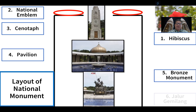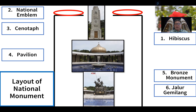Imagine you have just arrived. Outside the National Monument you will see lots of hibiscus, so you can speak on hibiscus. As you walk in, you will see the Malaysian national emblem on both sides — left and right — of the main entrance. Walking further in, you will see the cenotaph, then after climbing the staircase you will reach the pavilion.